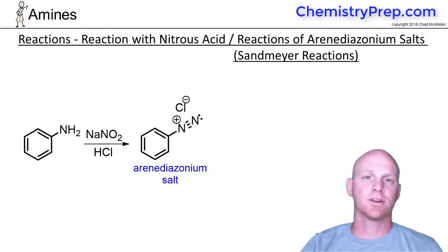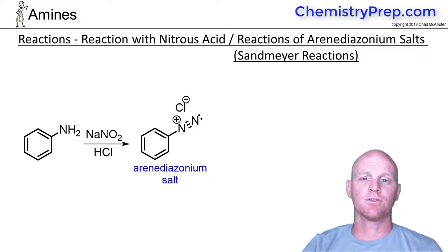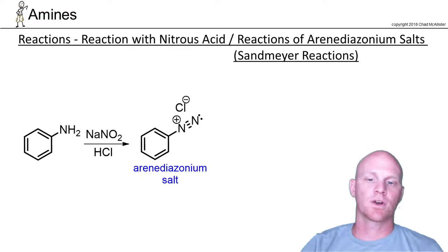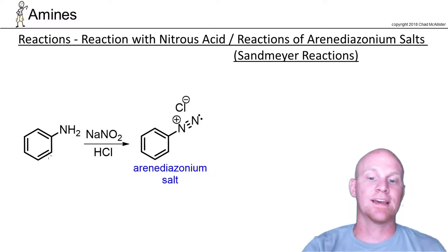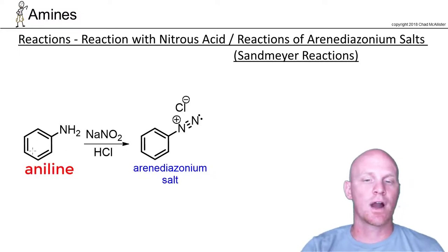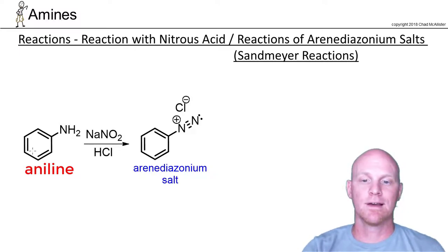The next reaction of amines we're going to look at is particularly useful from a retrosynthesis perspective because there's a huge amount of variability and a lot of options. We're going to start specifically with aniline. You can do this with a normal primary amine or secondary amine, but they either form something that's not stable or just something that's not going to be synthetically relevant.